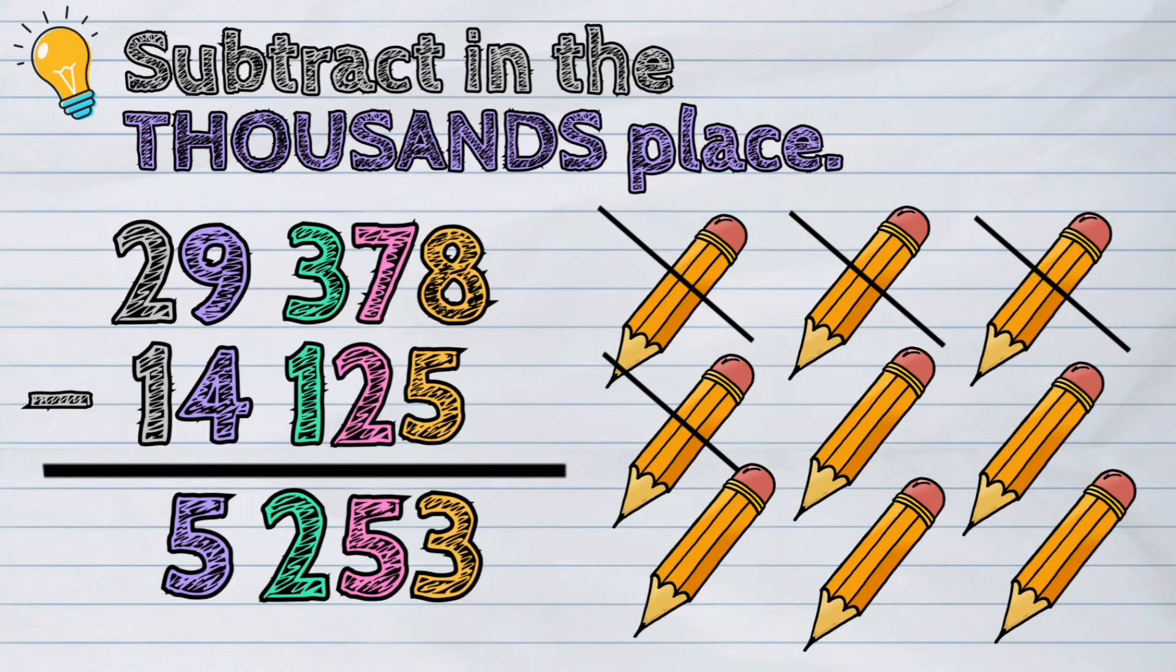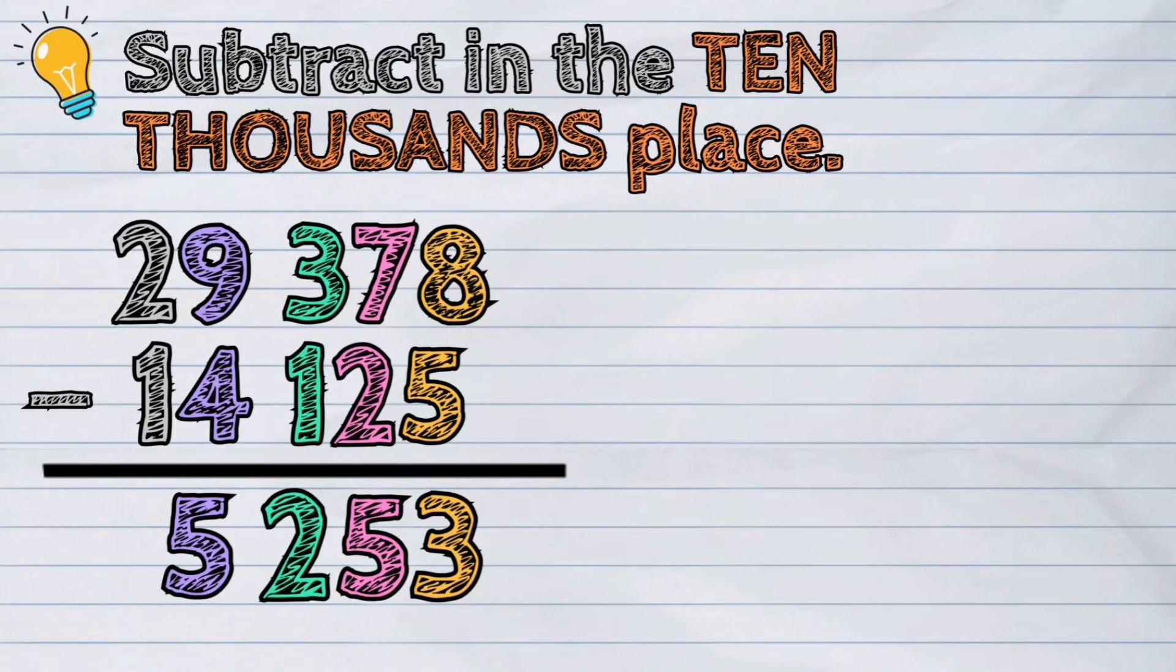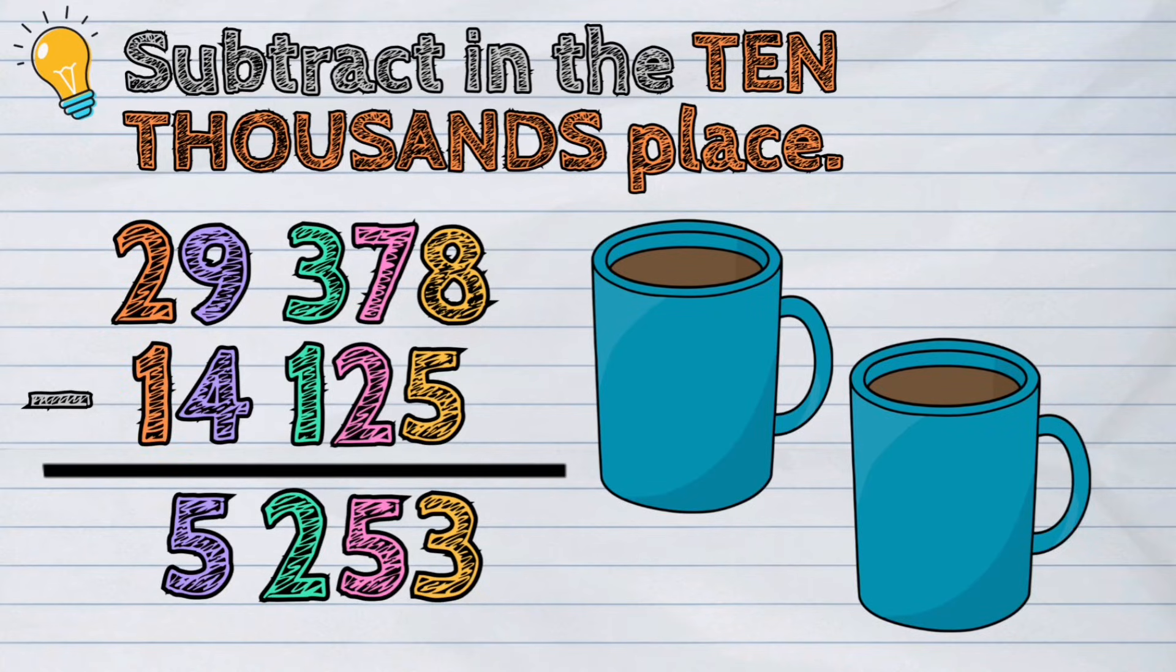And the last column is the tens thousands place. 2 minus 1 is equal to 1.